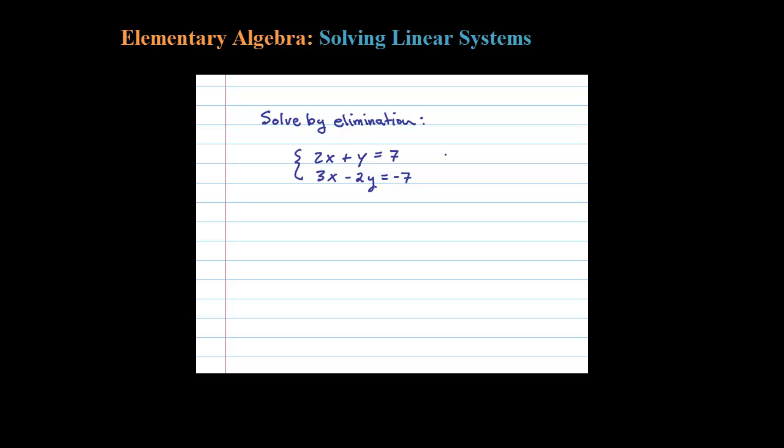When you do that on the left side, you have to distribute so you get the equivalent equation 4x plus 2y equals 14. And all I did there was multiply all the terms of the first equation by 2.